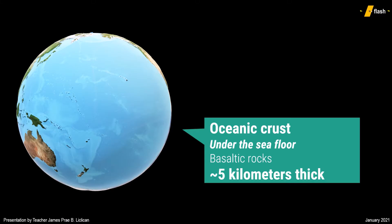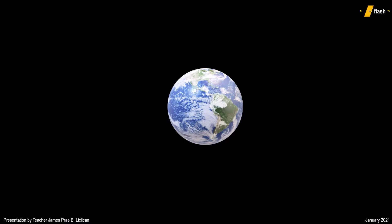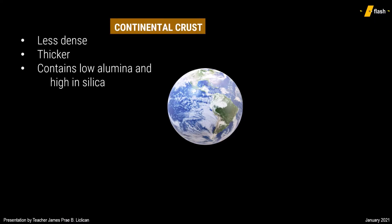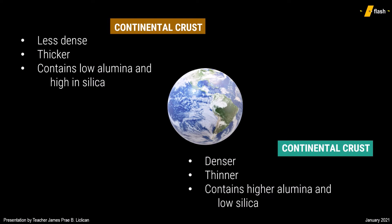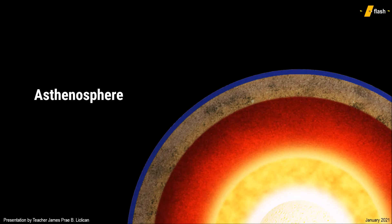The difference in density is caused by the immense pressure the lava was subjected to as it cooled and hardened to become a basaltic rock. Basaltic rocks, compared to granitic rocks, are exposed to the cold depths of the ocean, bringing their thickness to 5 km on average. The crust is made up of alumina and silica, where continental crust contains less alumina but is high in silica, while oceanic crust contains the opposite.